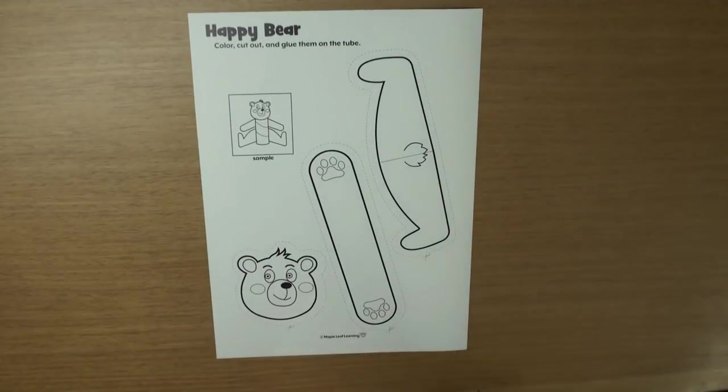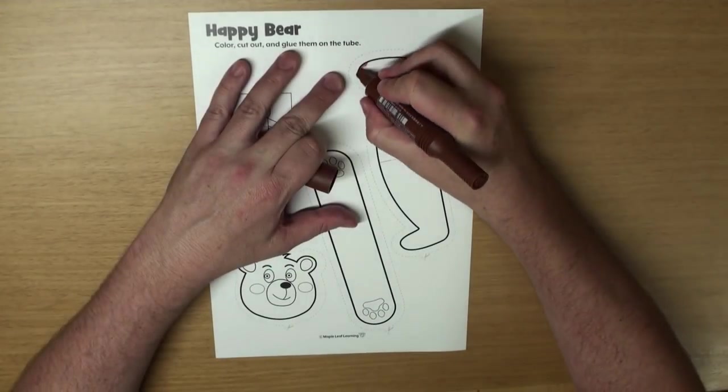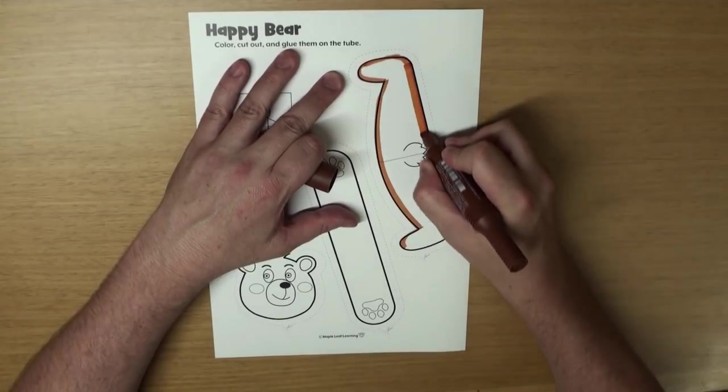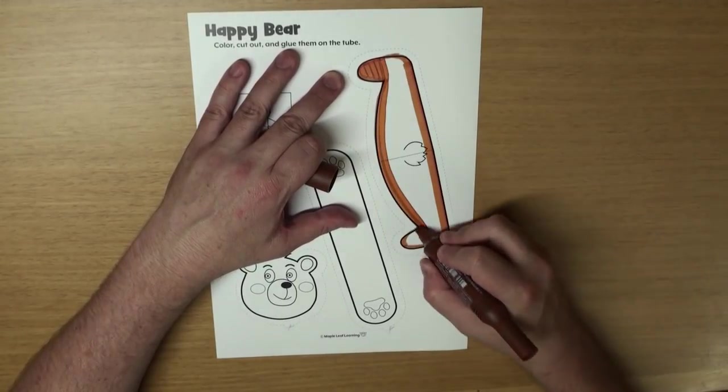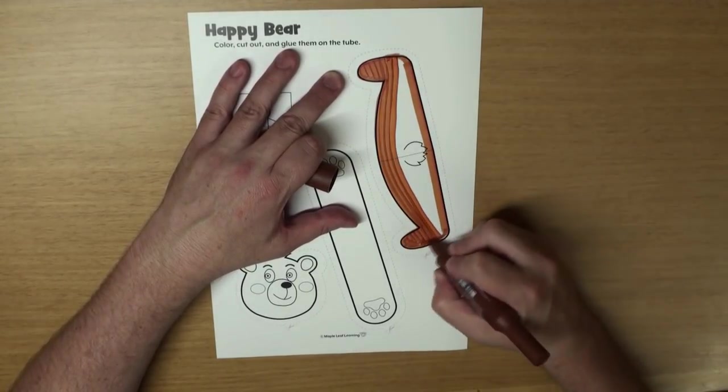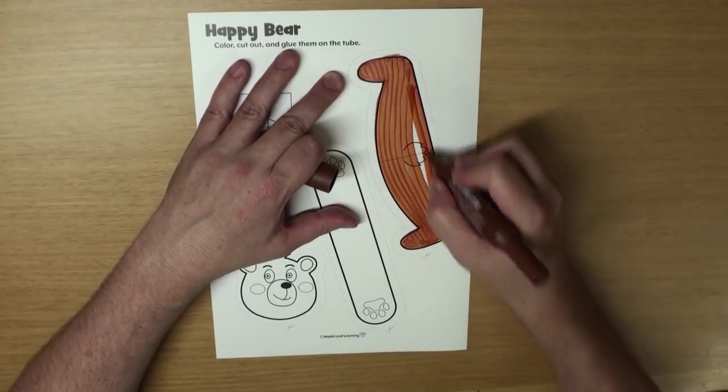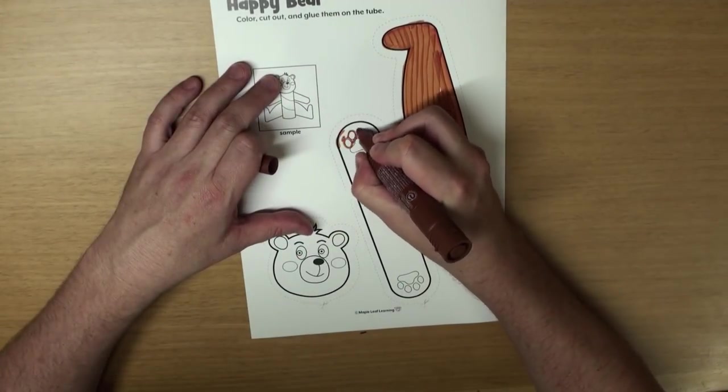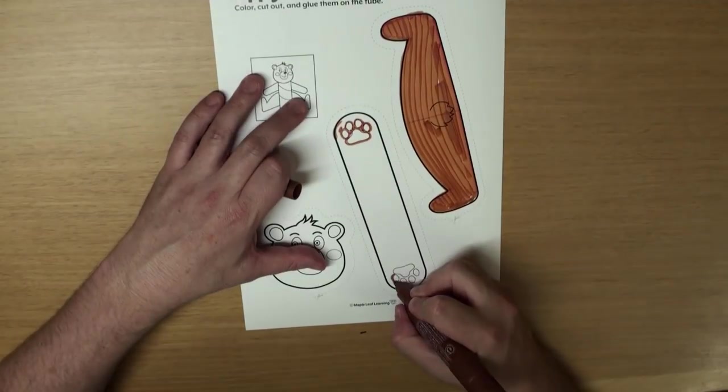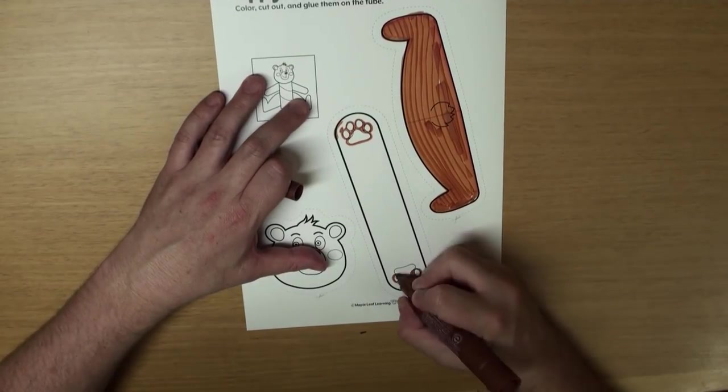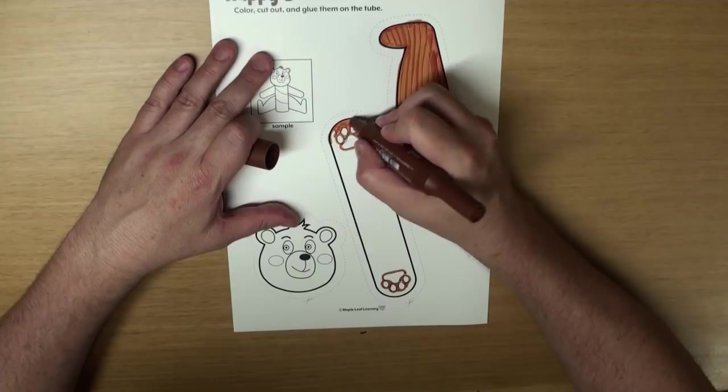Let's do some coloring. I'll color his legs brown, and his arms brown too. Be careful, we're going to color his paws pink after, so be careful when you color around them, okay?